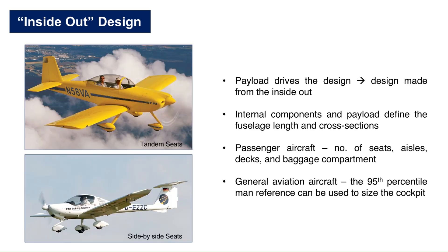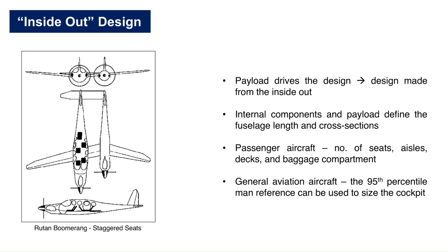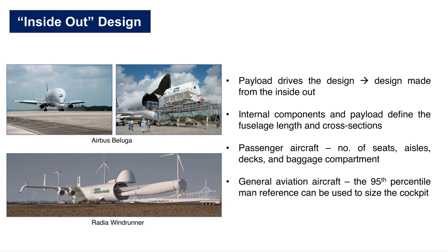The possibilities of seating are tandem seats and side-by-side seats. A unique arrangement is the staggered seating, in which one seat is slightly behind the other so that the shoulders of the two people overlap. Some special cases of inside-out design can be seen here. We will go through a step-by-step fuselage design process later in this video.